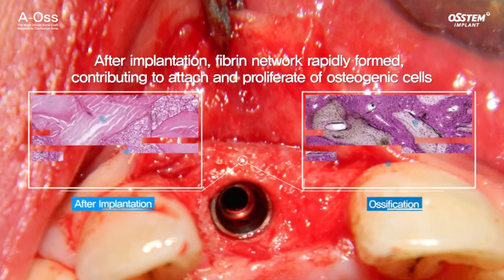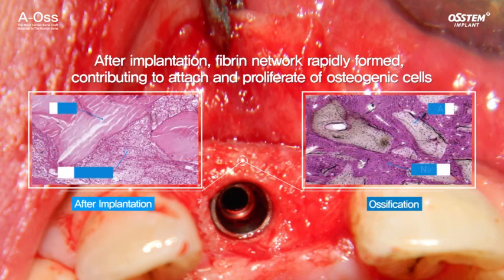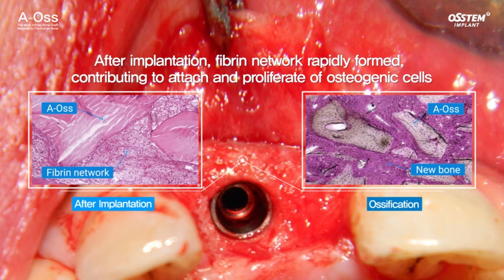Finally, Aeos, which has a pore structure similar to that of the human bone, has a structure that allows osteoblast cells to attach and proliferate, thereby forming excellent bone quality.